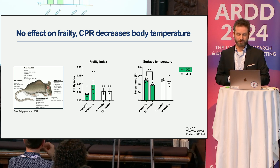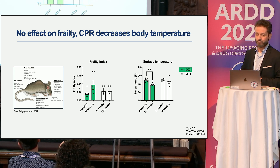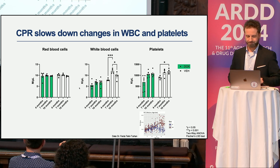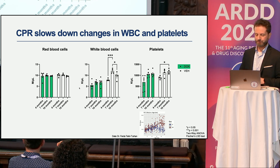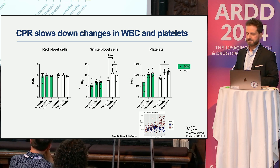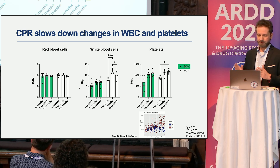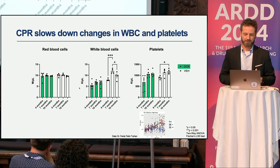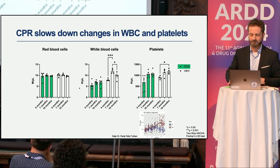One difference we did find is in surface temperature: reprogrammed mice run cooler than vehicle controls, and we have hypotheses we are currently investigating. Looking at the hematopoietic and hematological system—chosen because it has dramatic age-associated phenotypes in mice—two typical age-related changes are increases in white blood cells and platelets. Vehicle controls show these increases over time, as expected. In our reprogrammed mice the trajectory moves in the same direction, but the change does not reach statistical significance, meaning these age-associated increases are attenuated in the NOLIFE reprogrammed animals.